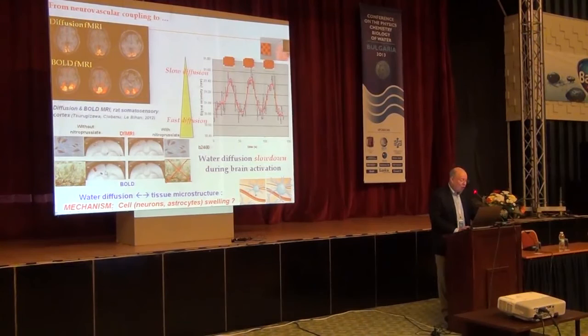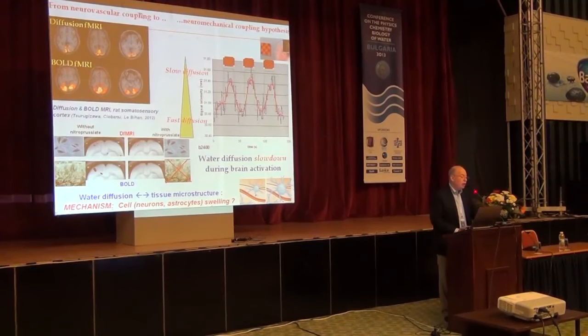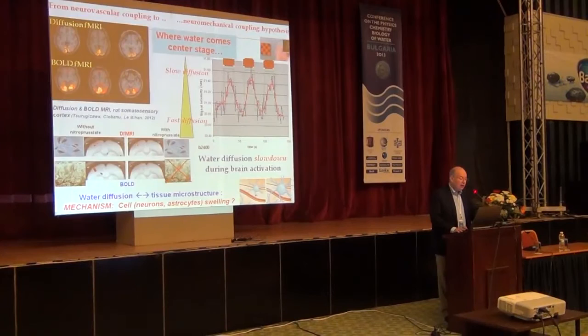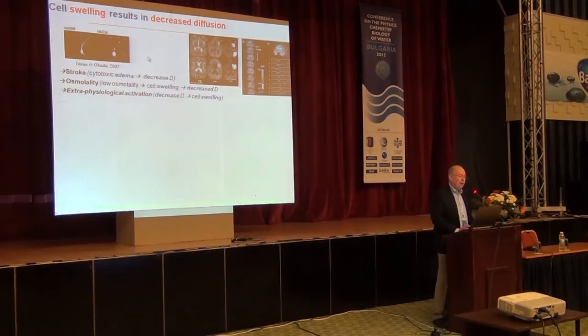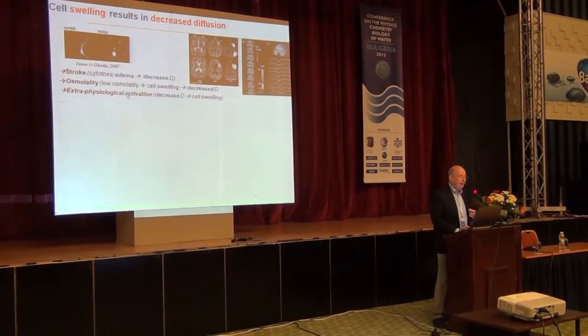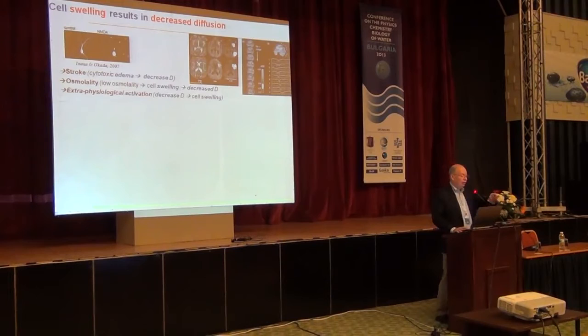Water diffusion in tissue reflects microstructure. We are switching from the neurovascular paradigm to something which could be a neurocellular paradigm — cell swelling and diffusion of water. There is clear evidence of a relationship between decreased diffusion and cell swelling. In stroke, cells swell and diffusion decreases — this is very well established. If you change the osmolality of the tissue to induce cell swelling, again diffusion decreases. Using potassium ion stimulation, again we see decreased diffusion and cell swelling. So there is a relationship — we don't yet know how to explain it fully, but it exists.